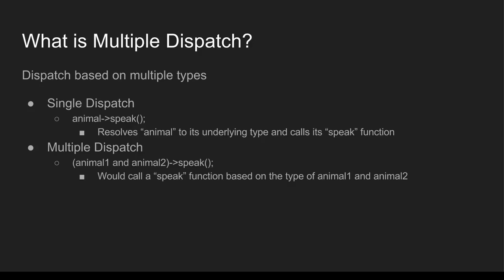We have an abstract object called animal and we call a speak method on it. We have a single abstract type — in this case it's an animal with a base class probably also called animal — and we're going to resolve the method based on this one type. That's the key: we're using one type here. For example, if the underlying type were a dog and we called the speak method it may bark, whereas if it were a cat it might meow instead.